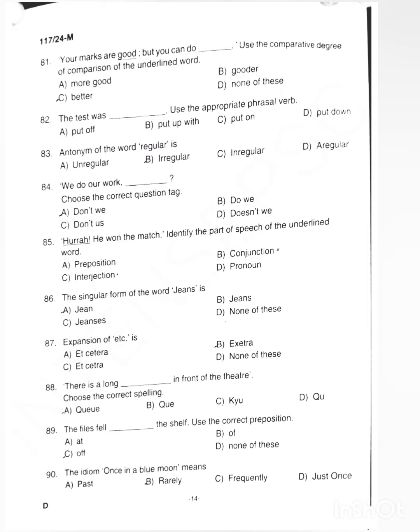For question 83, your marks are good but you can do dash. Use the comparative degree of comparison of the underlined word. The comparative degree of good is better. The answer is option C, better.